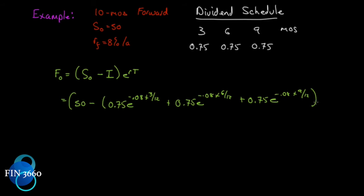Plus 0.75e^(-0.08×9/12) for nine months. We'll close bracket on that. So here we've dealt with what's in the bracket, and now we're going to compound that continuously at the risk-free rate for 10 months of the twelve.